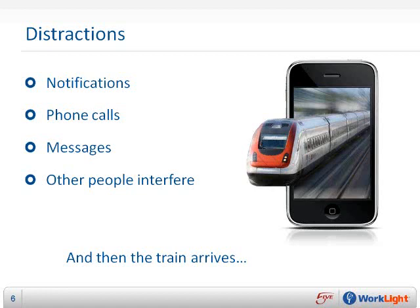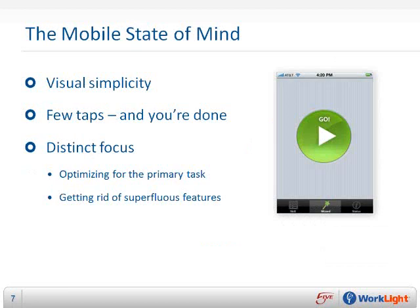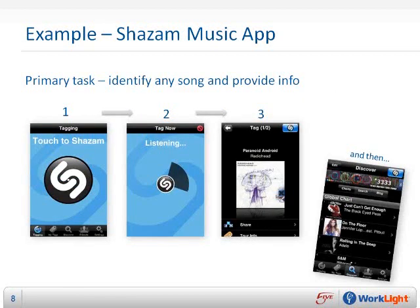We try to accomplish a micro-task while waiting for the train to arrive, but then it really arrives and we have to board. Therefore, we have to specifically design for the mobile state of mind. We have to achieve visual simplicity so that the user understands what is expected of them in a split second. The micro-tasking atmosphere requires that users achieve their goal in just a few taps — one, two, three, and you are there. The app should have a distinct focus, its primary task distilled and catered optimally, while secondary features should never obstruct the flow and unexpendable features should be removed entirely.